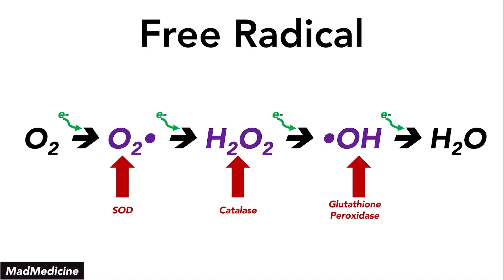Let's re-examine the slide from earlier in the lecture where we talked about how oxygen can become water through free radical steps as electrons are accepted, and see where these enzymes play a role. Superoxide dismutase will help with preventing superoxide from damaging the body — it scavenges at that step. Hydrogen peroxide will be taken care of by catalase, which converts two hydrogen peroxide molecules into 2H₂O plus O₂, converting it into water and oxygen. This is important because certain bacterial cells actually have catalase.